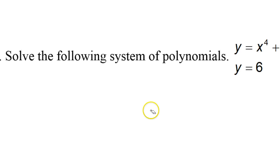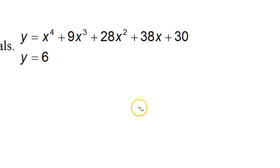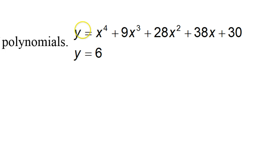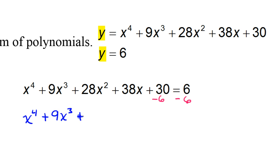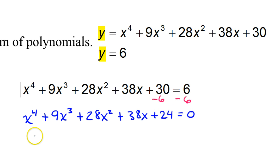Let's look at one more system — problem number 6. Again, these are both equal to y, so it makes sense they will equal each other. Here I've set them equal to each other. We need zero on one side, so I'm going to subtract 6 from both sides. That gives me x to the fourth power plus 9x to the third power plus 28x squared plus 38x plus 24 equals zero.